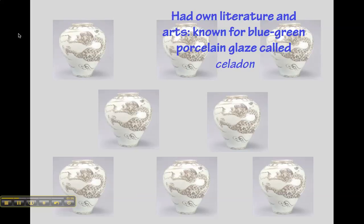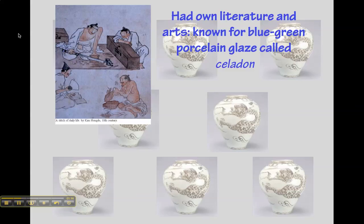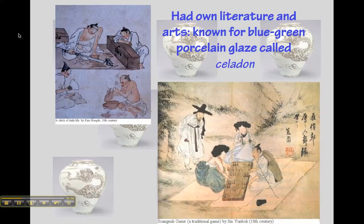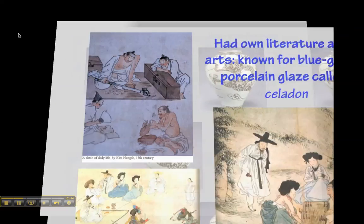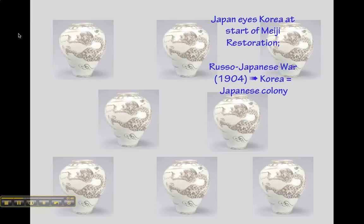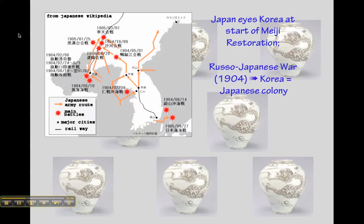Korea was known for a specific type of blue-green porcelain known as celadon. In addition to their own culture, literature, and arts, you can see in the background here pieces of the Korean celadon. You'll also remember that at the start of the Meiji Restoration, Japan looked towards Korea as an opportunity to gain a foothold on the mainland, where they needed natural resources to further their own industrialization.